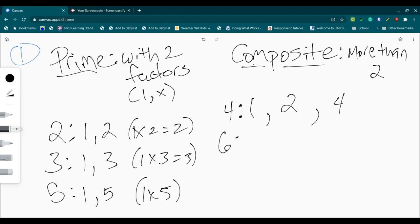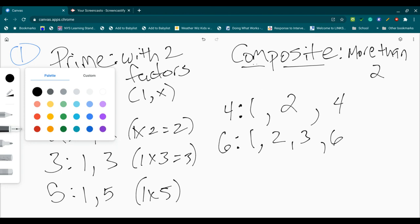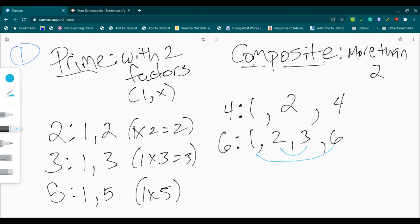Let's go to the number 6. 1 and 6. And put my commas here. 2 and 3. 1 times 6 is 6. 2 times 3 is 6. So putting together as factor pairs. And I think of those as like ingredients of numbers.